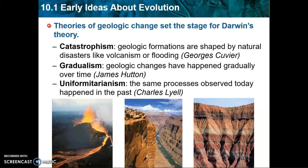Gradualism is the second geologic idea — the idea that geologic changes happened gradually over time, over massively long periods. For example, how long it would take for a river to cut the Grand Canyon, eroding its way through all those layers of rock — that's gradualism. If it happens in geology, then it stands to reason that in biology, species could also gradually change over time.